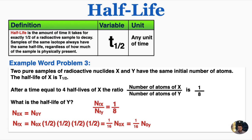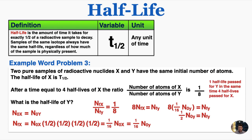I know that the final amount of X over the final amount of Y is 1 over 8. Rearranging that equation, I find that the final amount of Y is 8 times that of X. And I know that the final amount of X is equal to one-sixteenth times the original of Y, and I find that the final amount of Y is one-half of the original amount of Y. So that means exactly one half-life of Y has passed in this time. And I know that this time is equal to four half-lives of X, so the half-life of Y is four times the half-life of X, which is 4T subscript one-half.